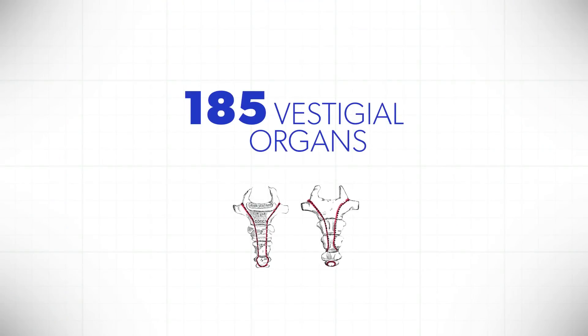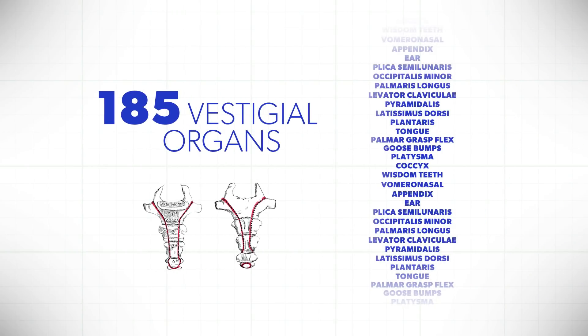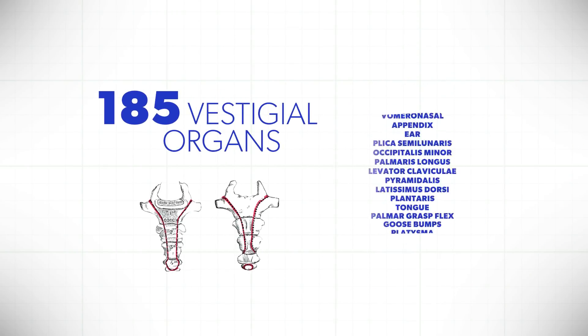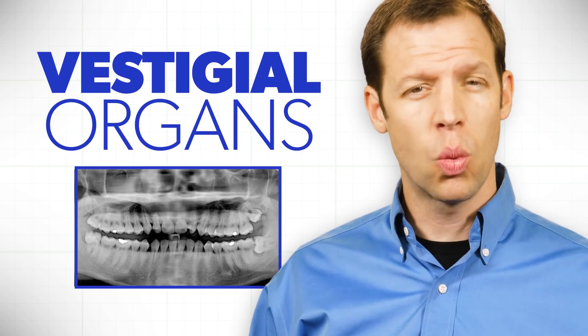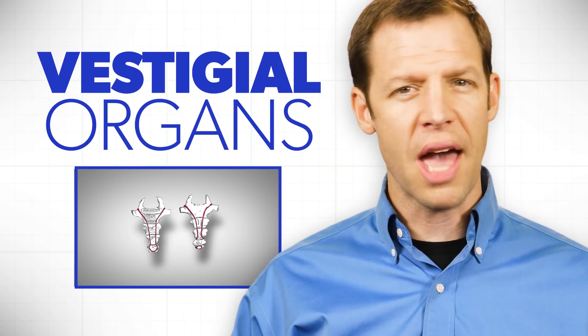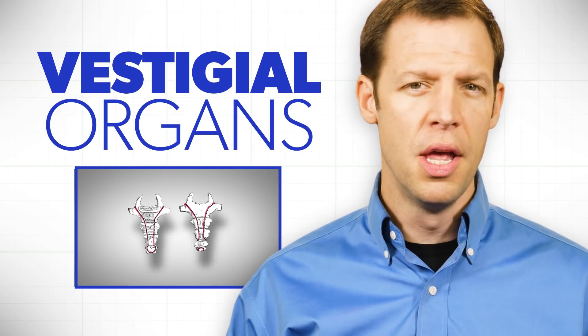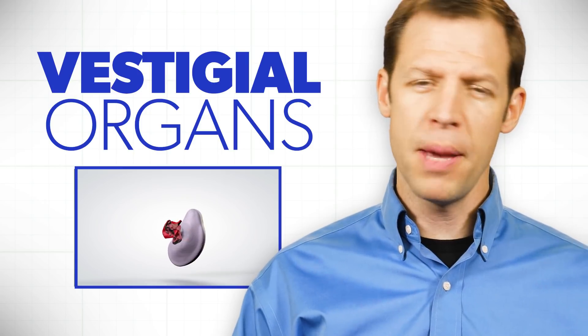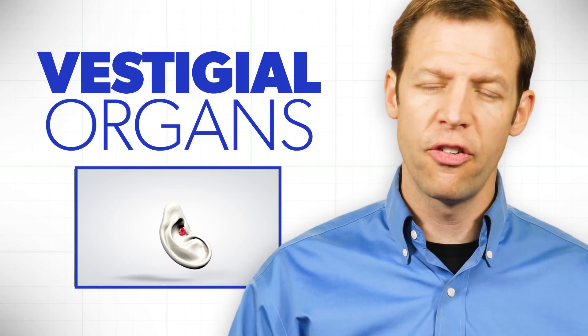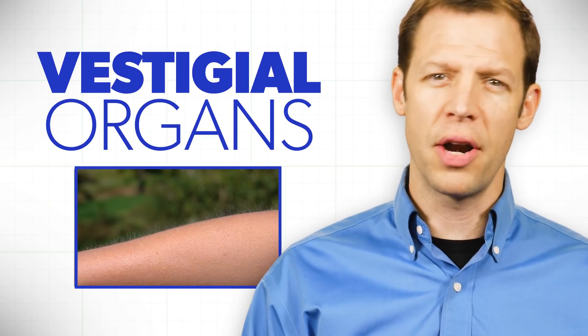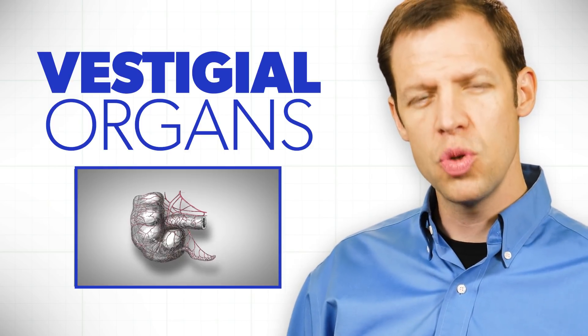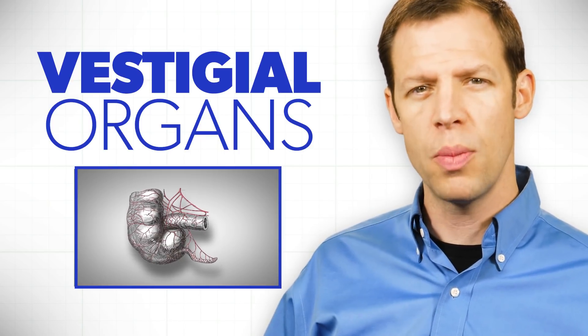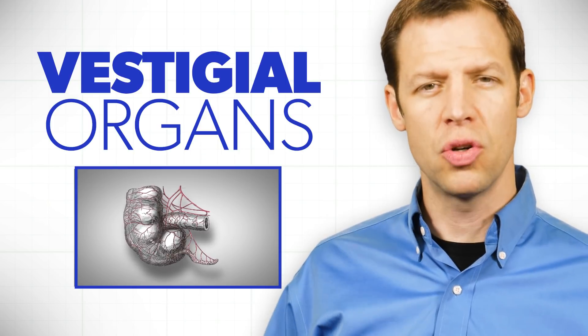That list of 185 vestigial organs began to shrink gradually and then rapidly to where now there are only a few, a handful of these organs that people will put forth as proof of evolution. The die-hard evolutionists still attempt to say that some organs in the human body are vestigial. They aren't, but let's look at the ones that they suggest to us are.